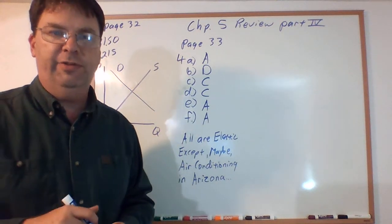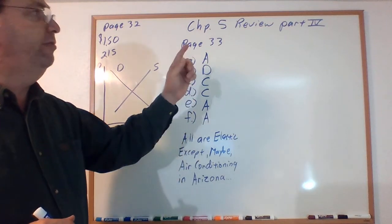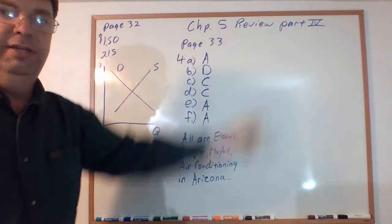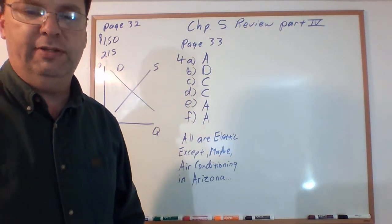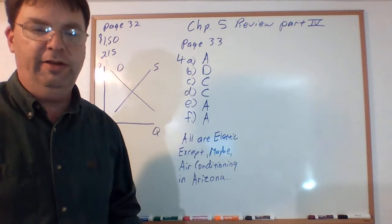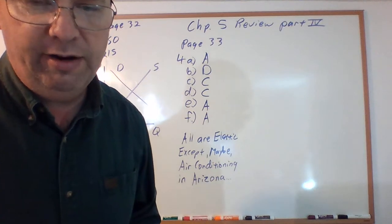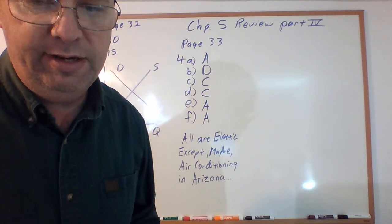Okay, we're almost at the end for this review. This is Chapter 5 Review Part 4, and so we should be on page 32. I think we are back on our agricultural supply and demand graphs.